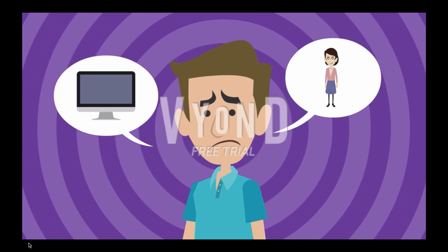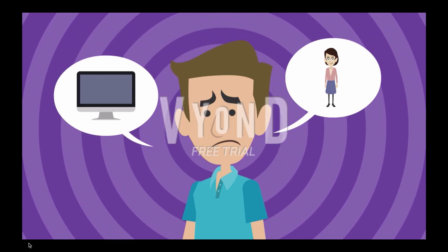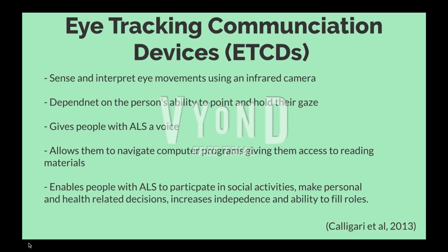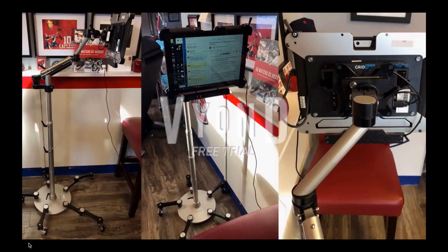Technology such as eye gaze and communication devices has been developed to assist people with ALS to communicate. Eye tracking communication devices (ETCDs) are often used in the later stages of ALS when the ability to speak is compromised. ETCDs sense and interpret eye movements using an infrared camera and are dependent on the person's ability to point and hold their gaze. This technology gives people with ALS a voice, allows them to navigate computer programs, access reading and news material, and permits them to partake in social, educational, recreational, and business activities. ETCDs allow people with ALS to make personal and health-related decisions and increase their independence. Screens are navigated by the point and hold of one's gaze instead of a mouse.